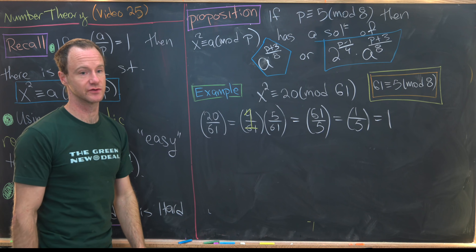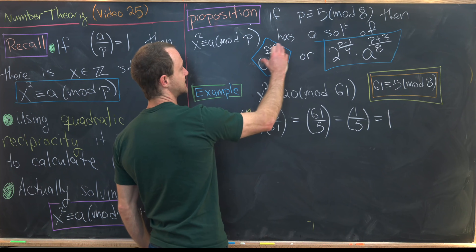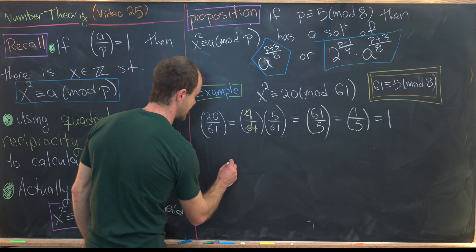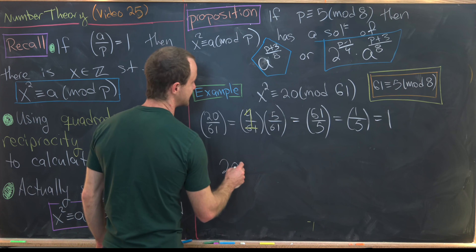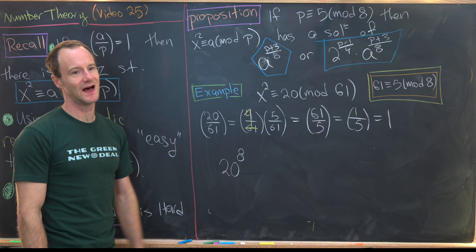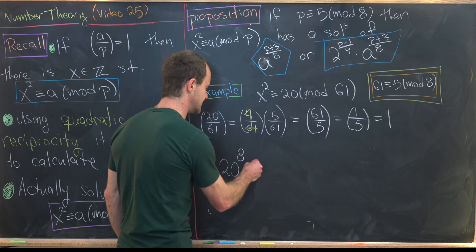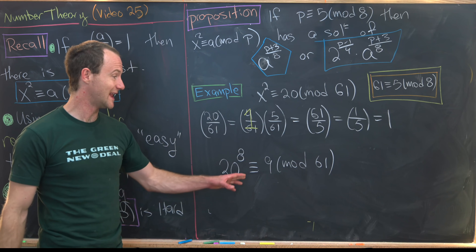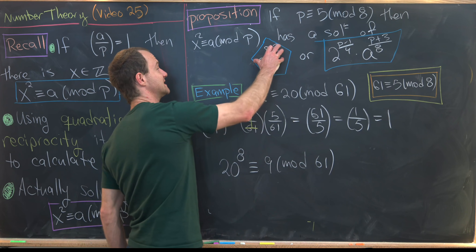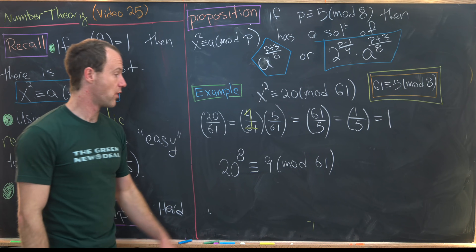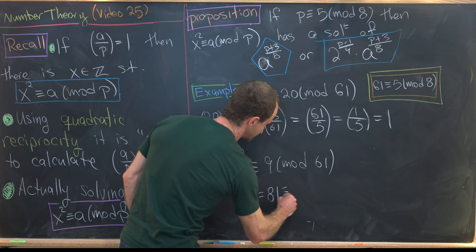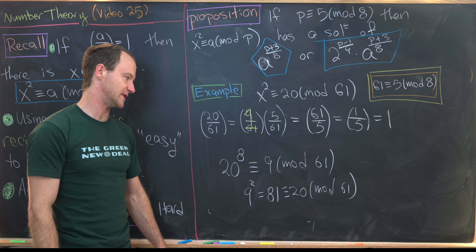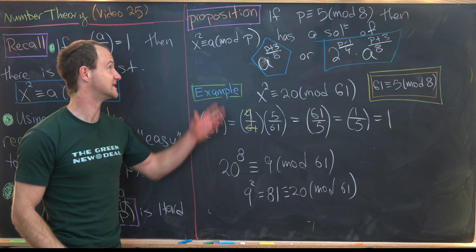Now we use the proposition to construct a solution. We calculate a^((p+3)/8) = 20^((61+3)/8) = 20^8. This is congruent to 9 mod 61. We check: 9² = 81 ≡ 20 mod 61. So 9 is indeed a solution. The first formula from the proposition worked directly.